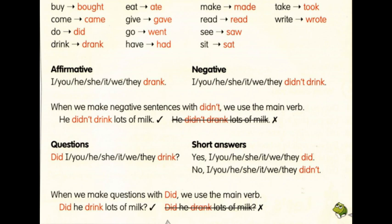Questions – запитання. Щоб утворити запитання, на початок виносимо did, далі вживаємо особу, і далі знову ж таки основне дієслово, тобто дієслово у першій формі. Did I drink – чи я пила? Did you drink – чи ти пив? Did he drink – чи він пив? Did she drink – чи вона пила? Did it drink – чи воно пило? Did we drink – чи ми пили? Did they drink – чи вони пили? Did – особа та основне дієслово у першій формі.